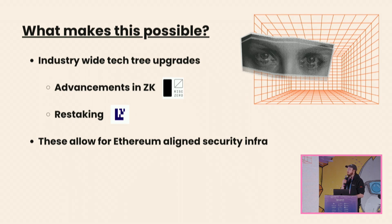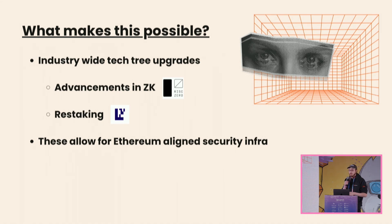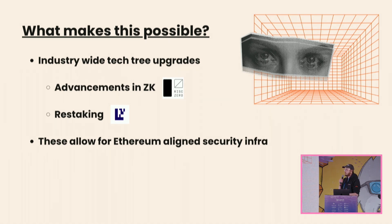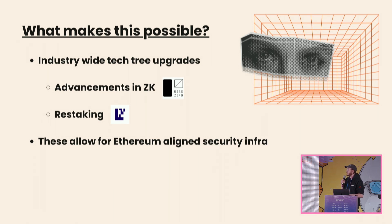Why am I talking about this now? Why hasn't there been much focus on this? A big reason is industry-wide tech upgrades — advancements in ZK, advancements in restaking. That's RiscZero on the ZK side, EigenLayer restaking on the restaking side. With restaking, this allows us to build security infrastructure that is Ethereum-aligned, leveraging Ethereum to have some type of shared security. On the ZK side, what's really important is the fact that we can now do general-purpose verifiable compute — things like RiscZero make it possible to do some really advanced stuff that wasn't possible before.